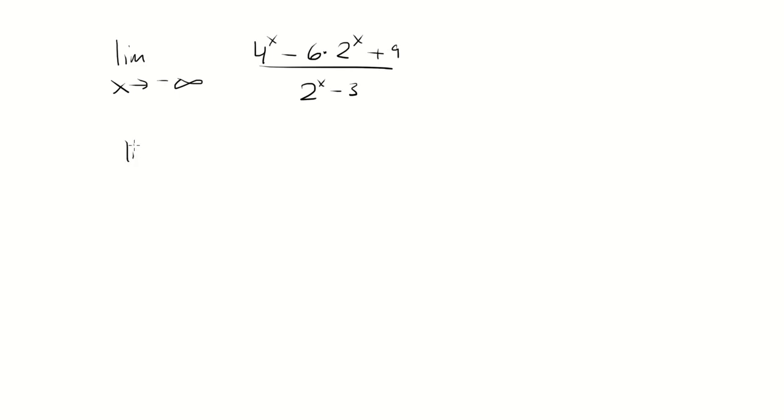First thing is to factor this out. This is the same thing as 2 to the x minus 3 squared over 2 to the x minus 3, which is just going to be 2 to the x minus 3.